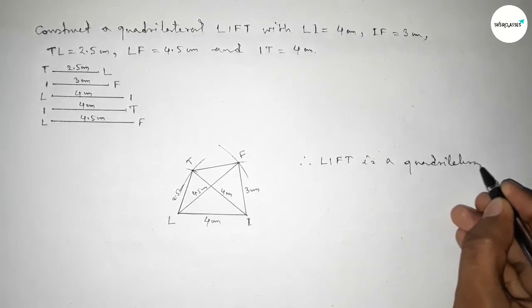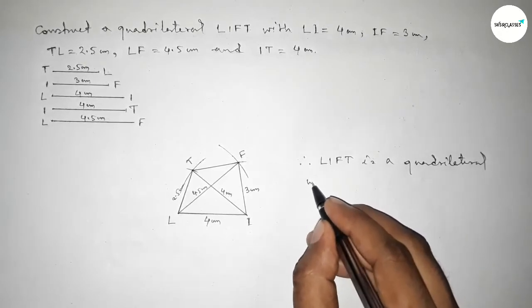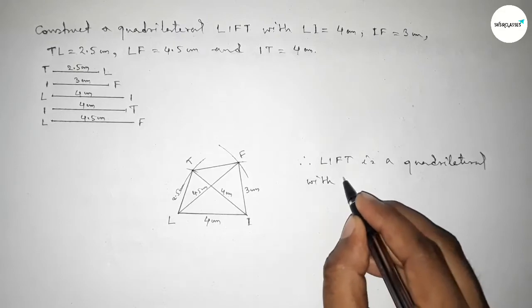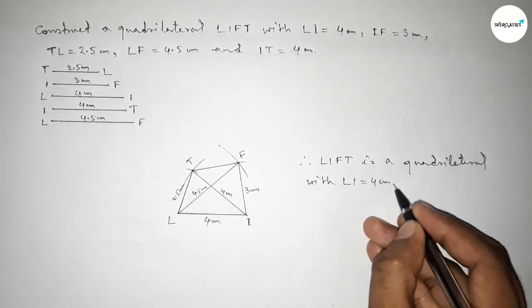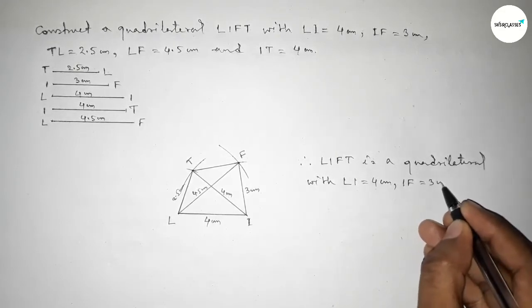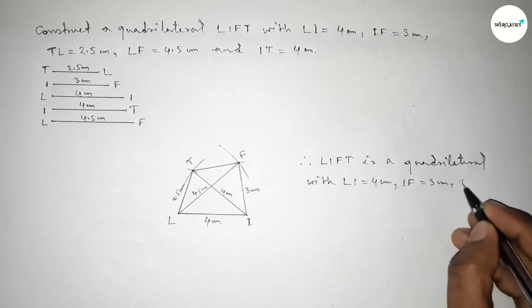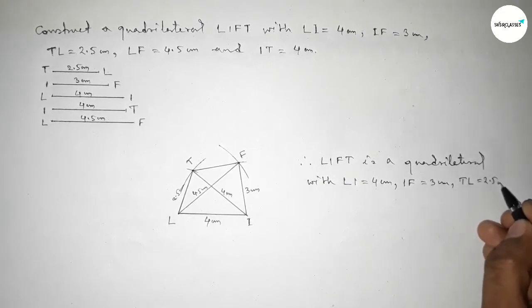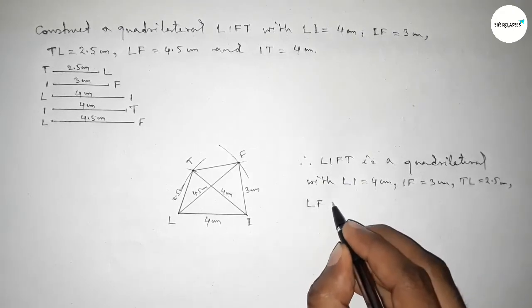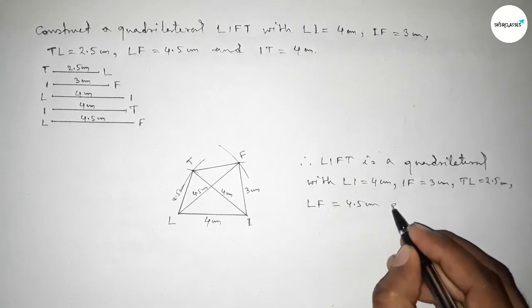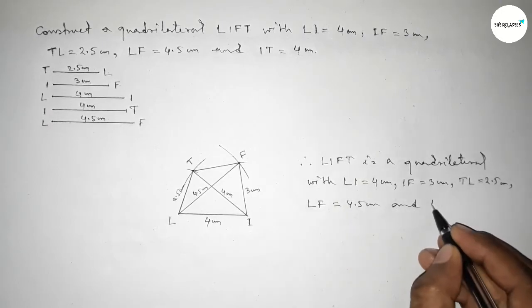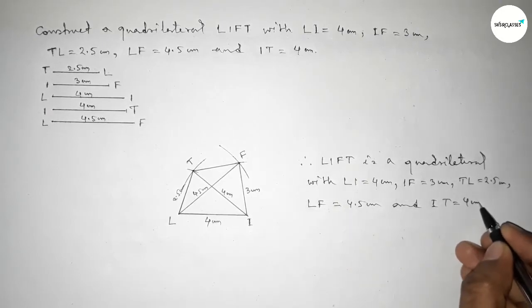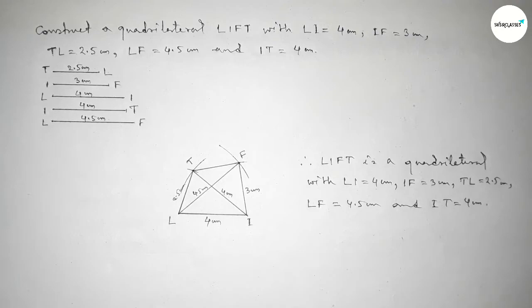So LIFT is a quadrilateral with given sides: LI equal to 4 centimeter, IF equal to 3 centimeter, TL equal to 2.5 centimeter, LF equal to 4.5 centimeter, and IT equal to 4 centimeter. That's all. Thanks for watching. If this video is helpful to you, then please share it.